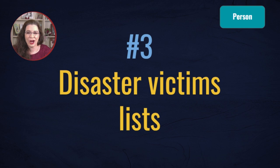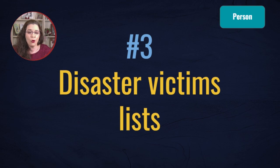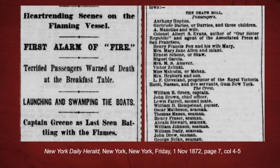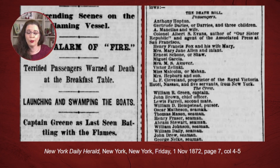Many disasters strike in the towns where our ancestors lived or while they were traveling. Therefore, look for disasters that might have affected your ancestors' life or the town in which they lived. Then, see if there's a list of those impacted by such a disaster. In this case, a fire was aboard a ship and a death roll was included for the passengers and crew members who died. If your ancestor was among this list, this would be a gold find.